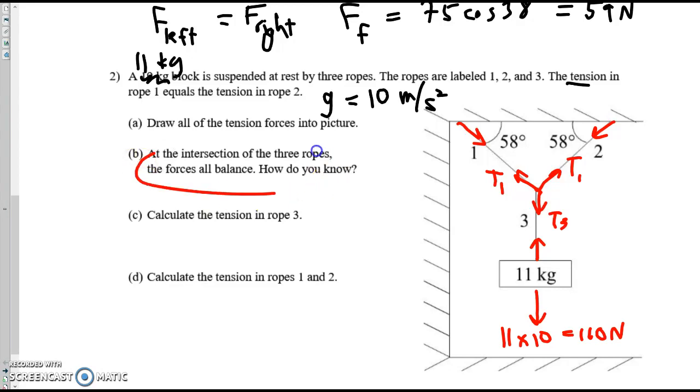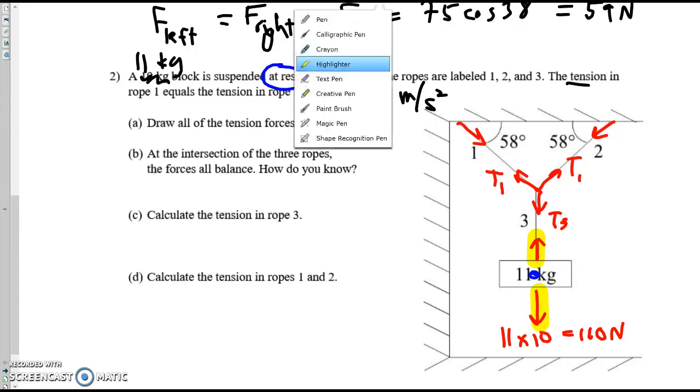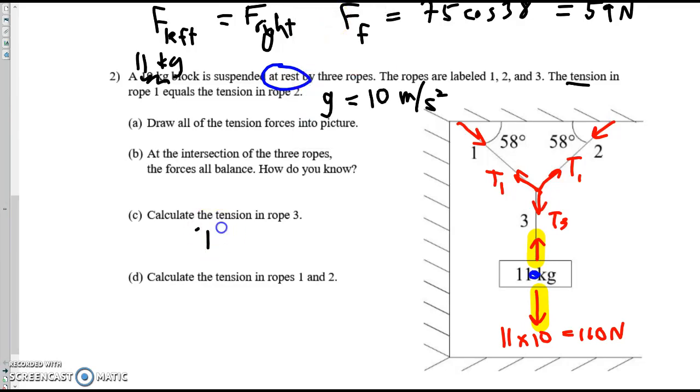Calculate...oh wait, first. The intersection. At the intersection. At the knot. The three forces balance. How do you know? Well, because it's staying at rest. Calculate the tension in rope three. Okay. We look at the block. There is one force pulling up on the block. It's T3. And one force pulling down. So when we balance the ups and the downs, we see T3 has to equal 110 newtons. Remember, you can only balance the forces on one object. You can't put this force down into the picture because T1 doesn't act on the block.